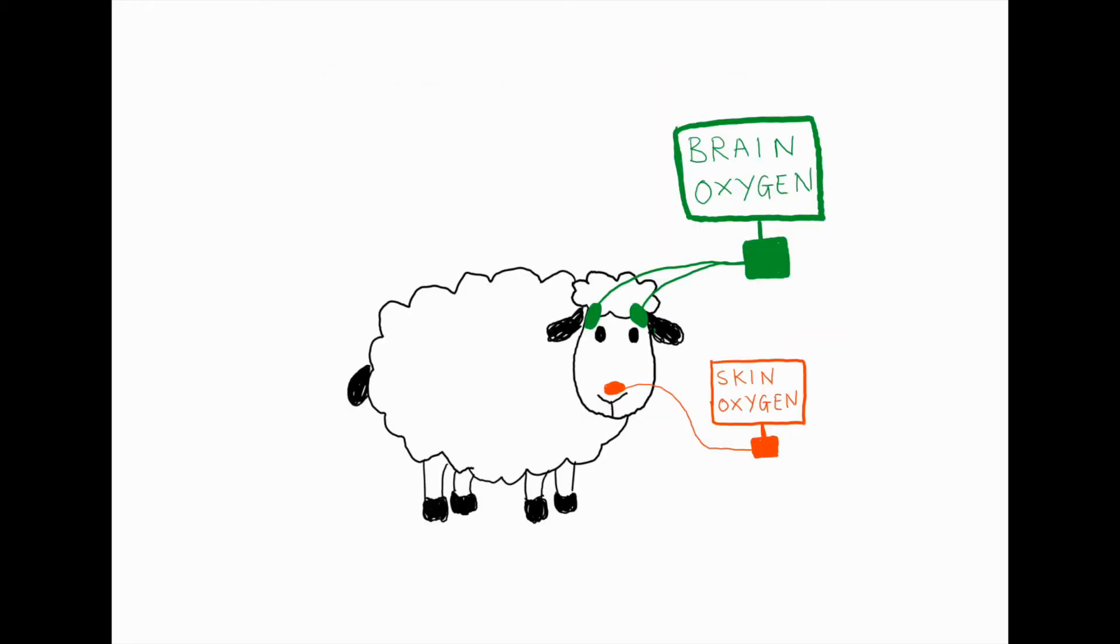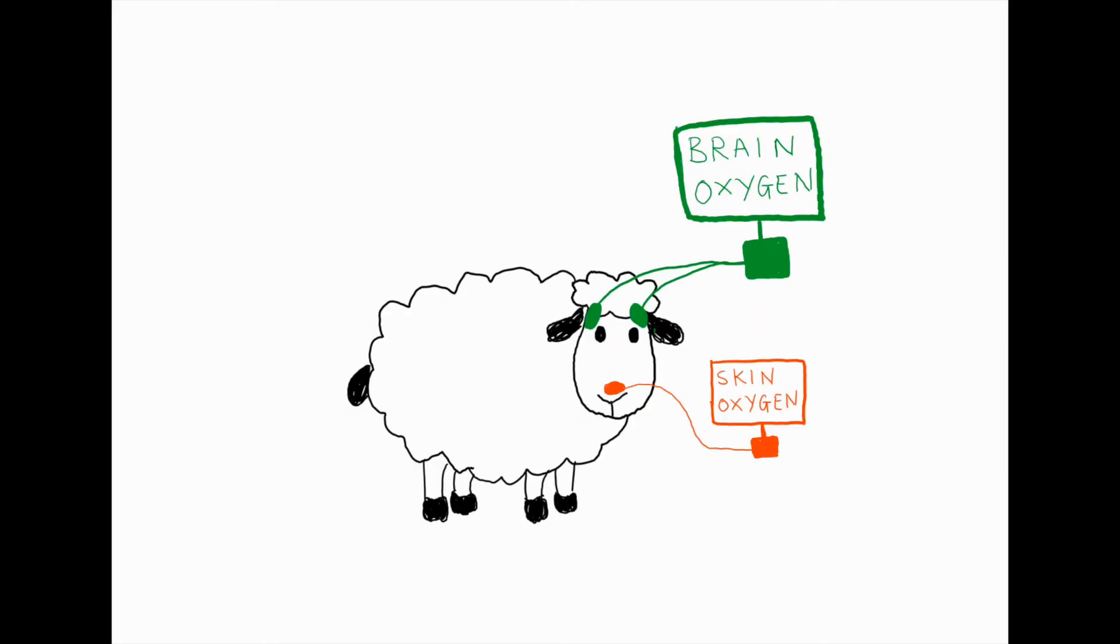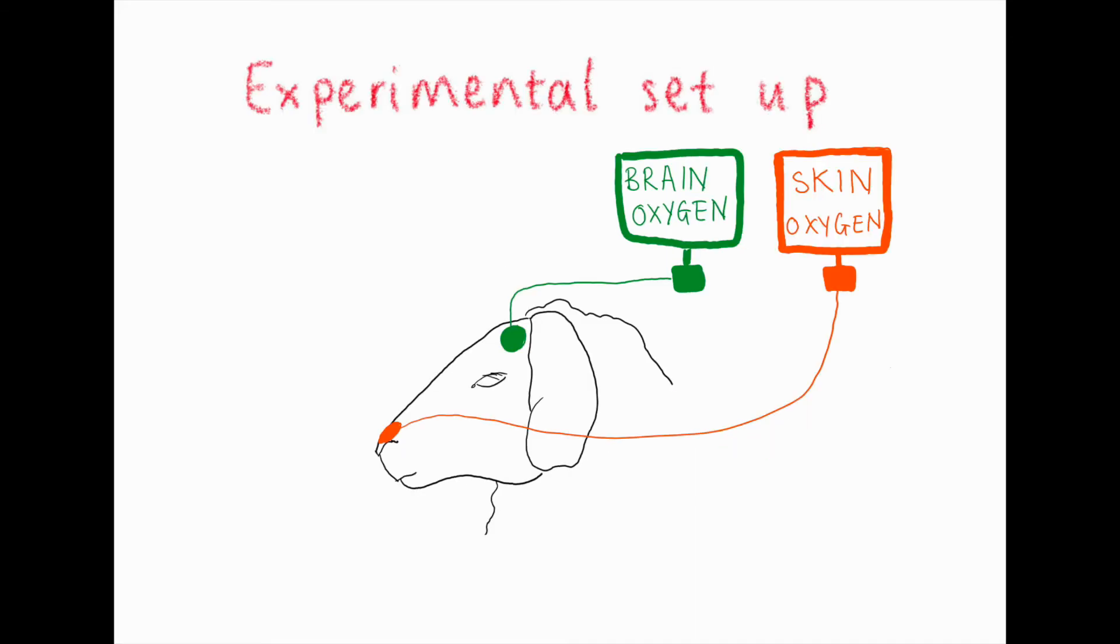The brain pulse oximeter was assessed in a sheep model of acute brain injury. Eight sheep were studied. The monitor is quite different from existing cerebral oximeters and uses the principles of pulse oximetry to detect both the pulse of blood and to measure oxygen levels in the brain. On the sheep, we had our brain pulse oximeter and also a skin pulse oximeter continuously measuring the optical signals.